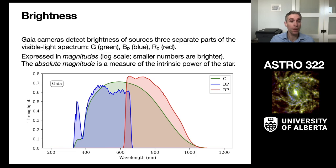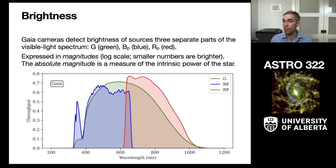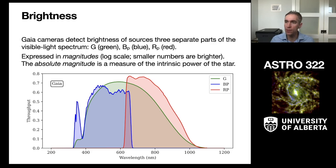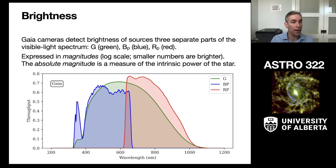These brightnesses are expressed in magnitudes, which use a logarithmic base-10 scale where smaller numbers correspond to brighter stars. We use the Gaia data to infer the intrinsic absolute magnitudes through a combination of apparent magnitudes and parallaxes, which gives us the power radiated by the star.